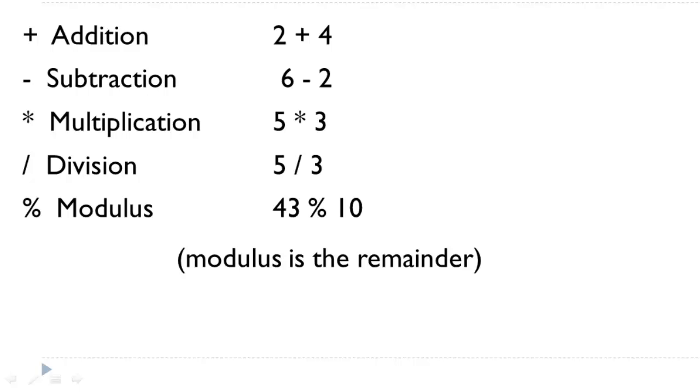In JavaScript, we have the traditional arithmetic operators. The plus sign for addition, the minus sign for subtraction, the asterisk for multiplication, the forward slash for division, and the percent sign for modulus. Modulus is the remainder of this expression.